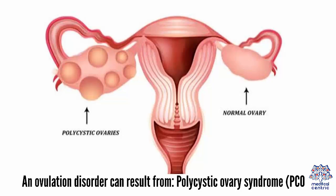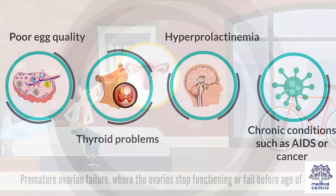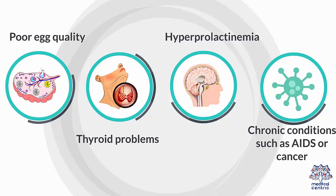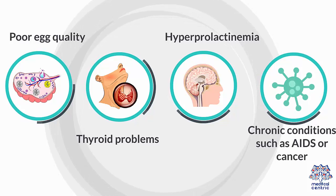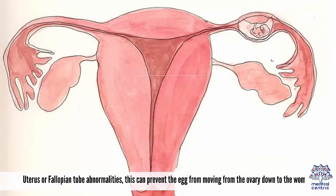An ovulation disorder can result from polycystic ovary syndrome (PCOS), premature ovarian failure where the ovaries stop functioning before the age of 40, poor egg quality, thyroid problems, hyperprolactinemia, or chronic conditions such as AIDS or cancer. Uterine or fallopian tube abnormalities can also prevent the egg from moving from the ovary down to the womb.